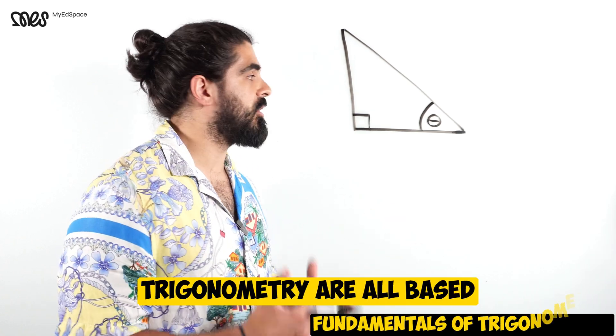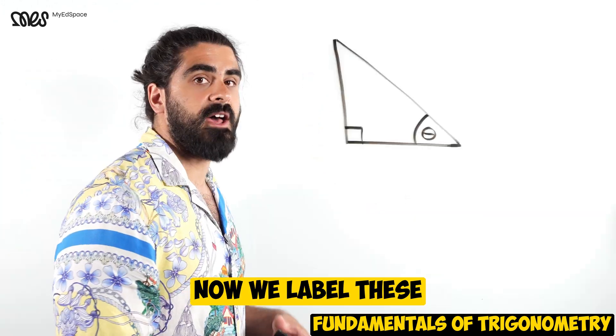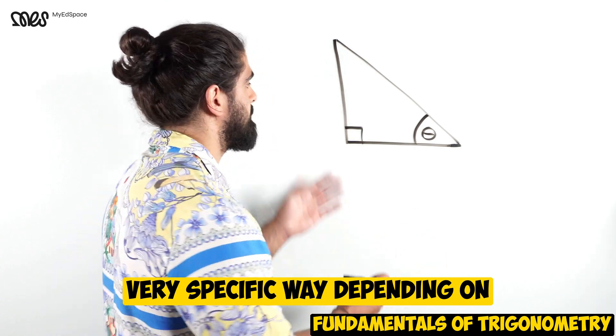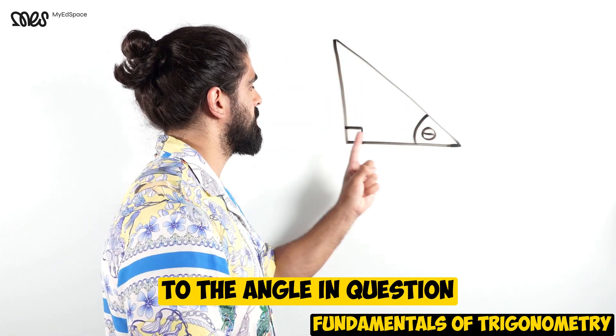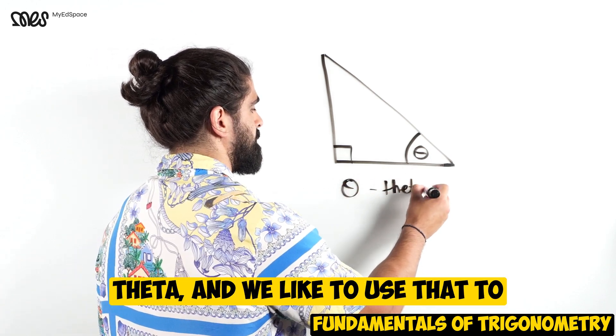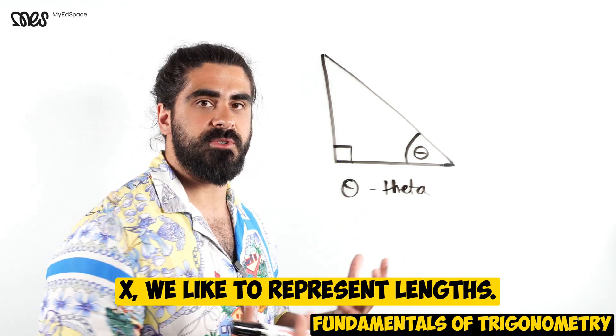The fundamentals of trigonometry are all based on the development of right angle triangles. We label these right angle triangles in a very specific way depending on where they are relative to the angle in question and the right angle. This angle here is the Greek symbol theta and we like to use that to represent angles. X we like to represent lengths.